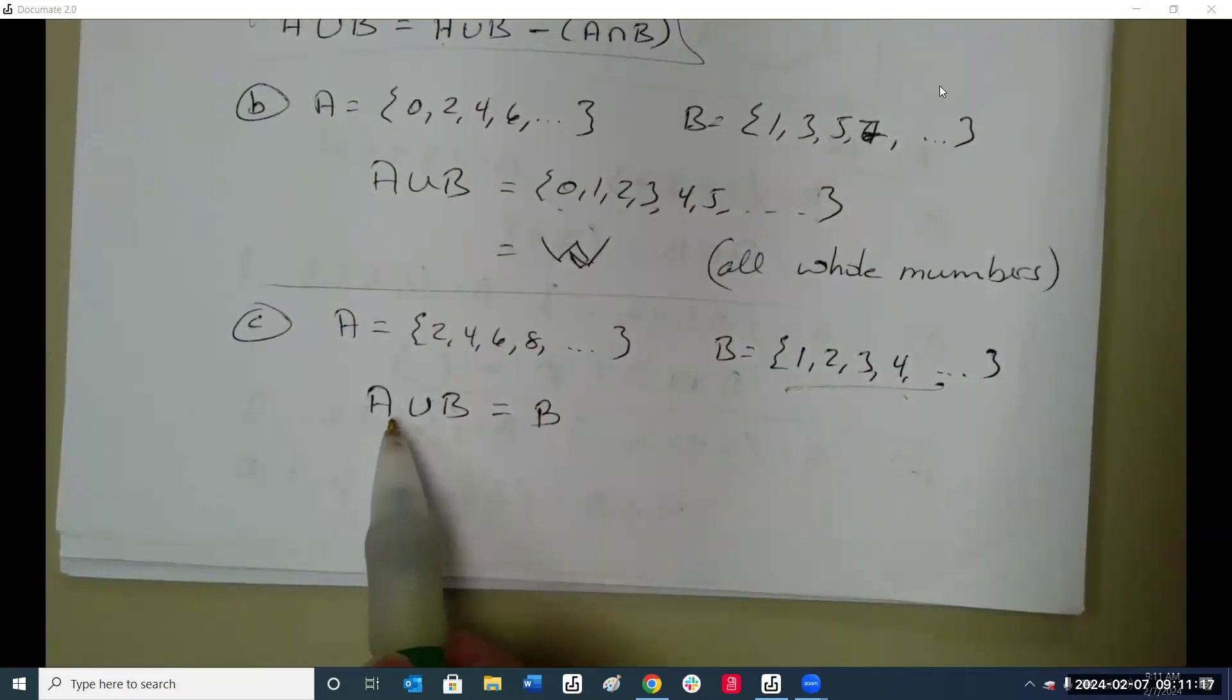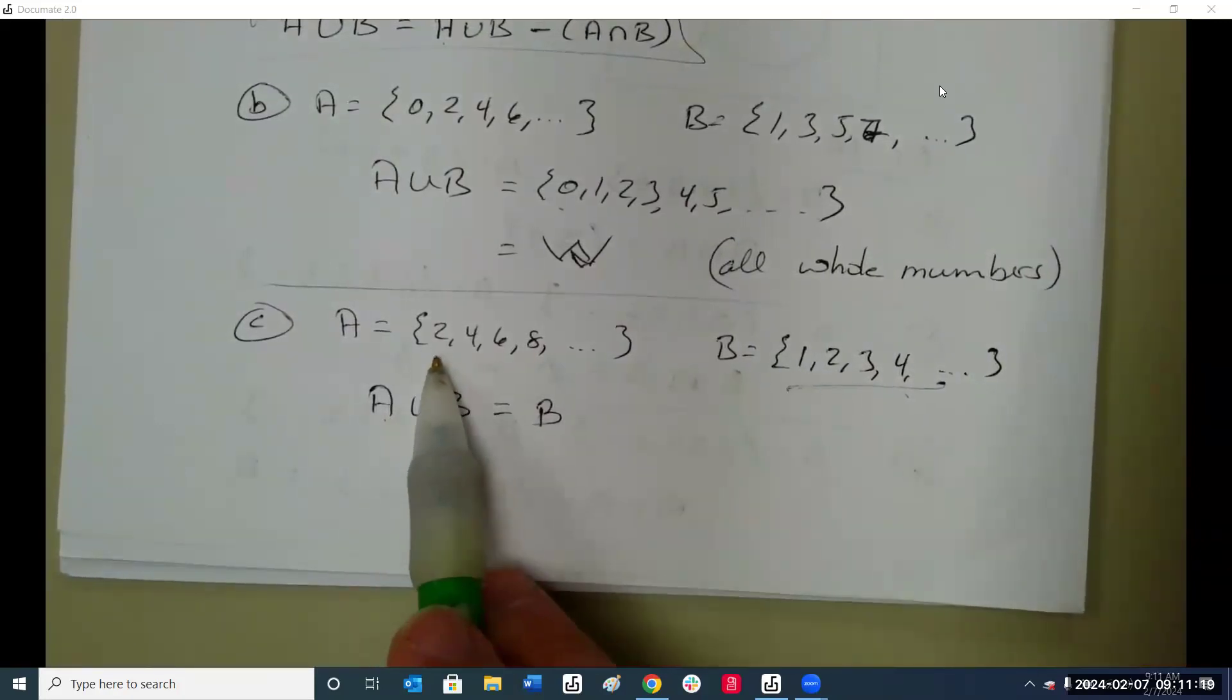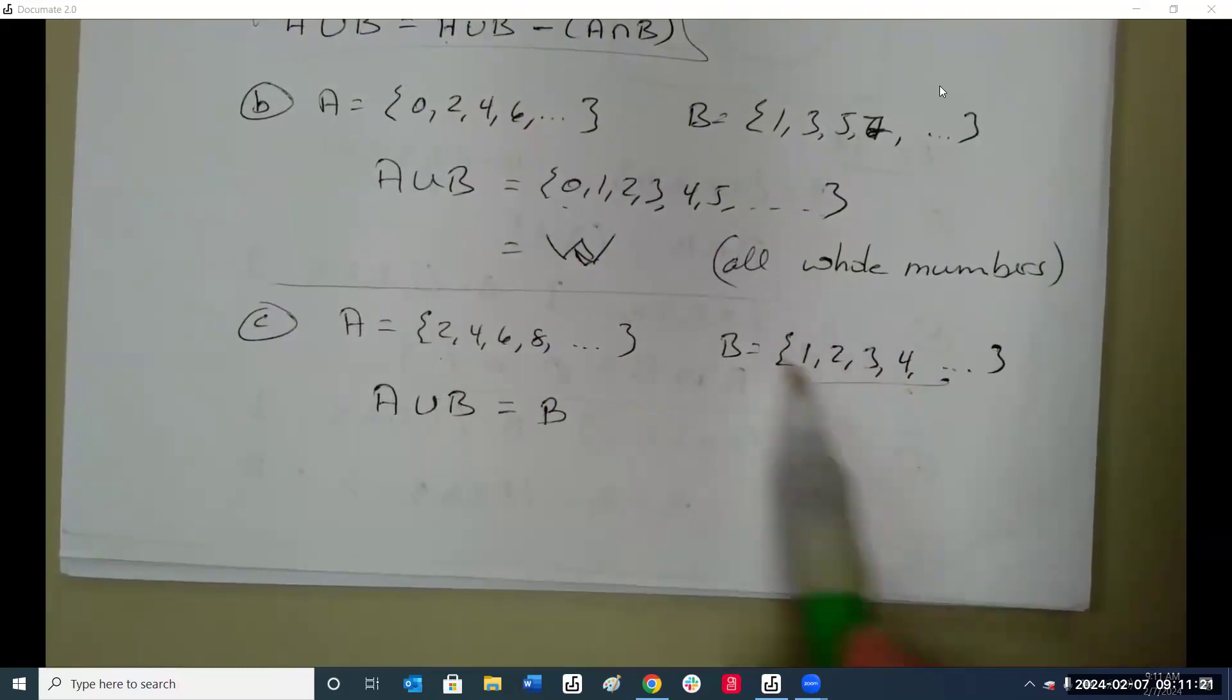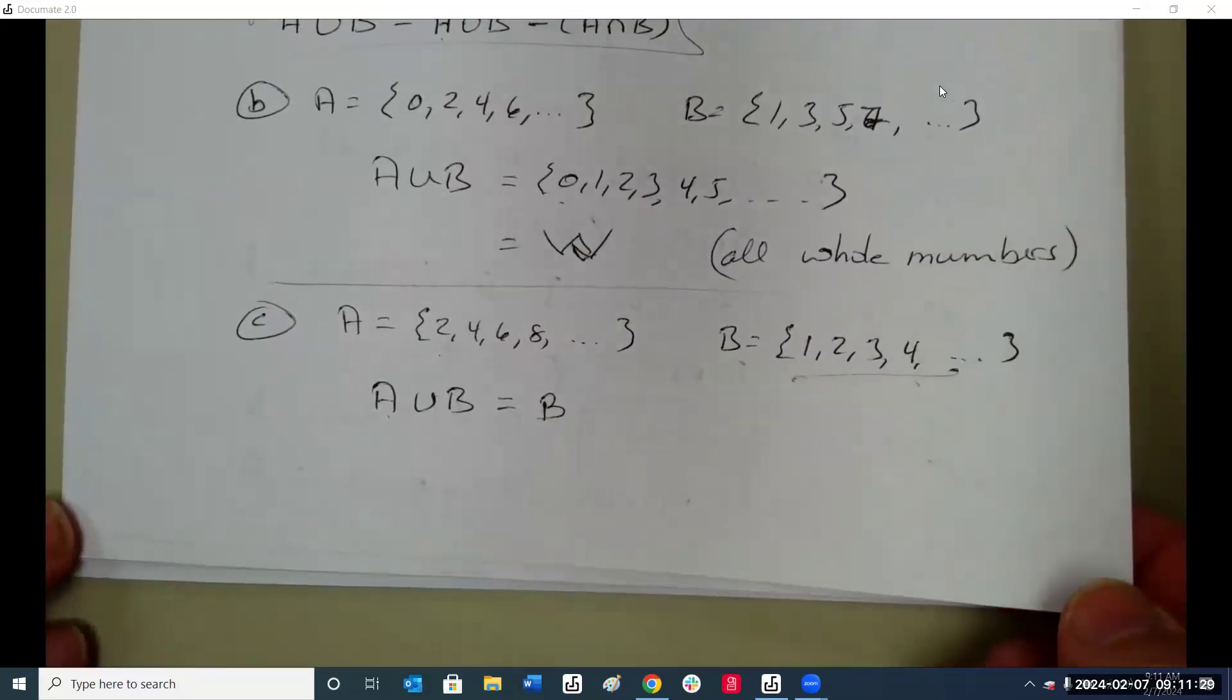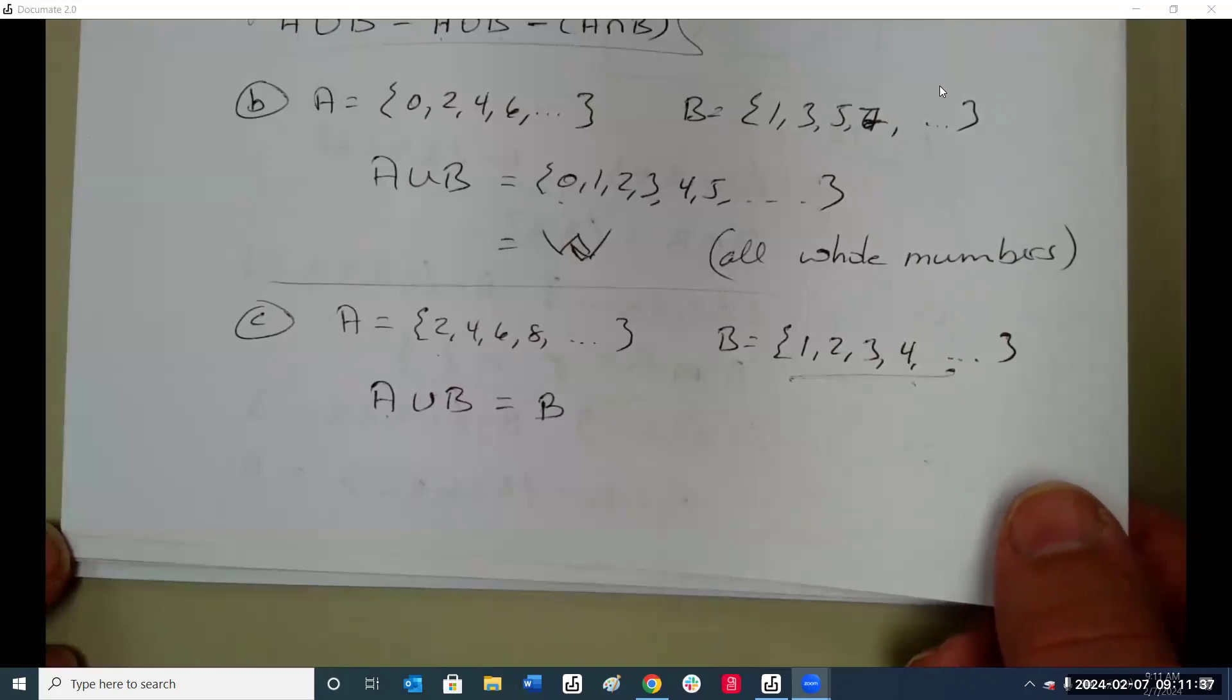And this one is A union B. All of these and all of these is all of these.